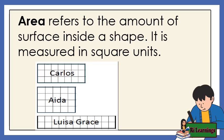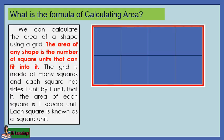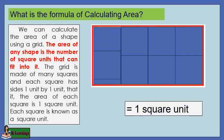Area refers to the amount of surface inside a shape. It is measured in square units. We can calculate the area of a shape using a grid. The area of any shape is the number of square units that can fit into it. The grid is made of many squares, and each square has sides one unit by one unit — that is, the area of each square is one square unit. Each square is known as a unit square.